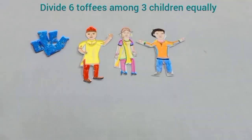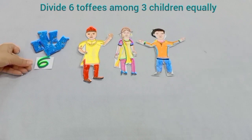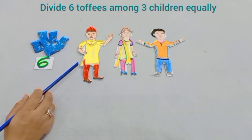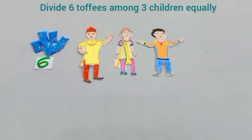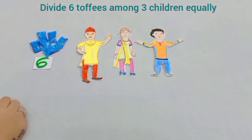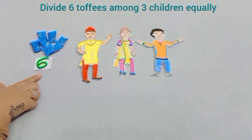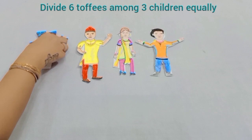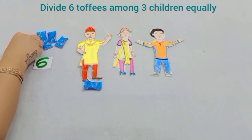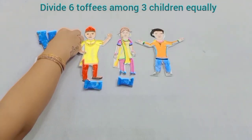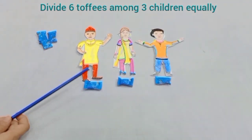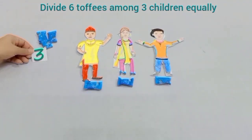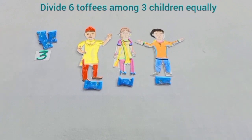Students, I am having 6 toffees and I have to divide these toffees among these 3 children equally. From these 6 toffees, I will give 1 toffee to each child. After giving these 3 toffees, we are left with 3 toffees.